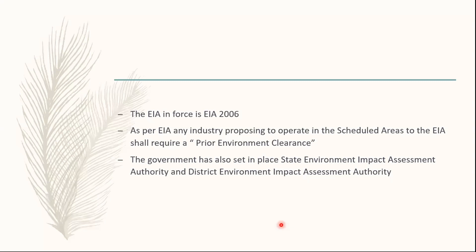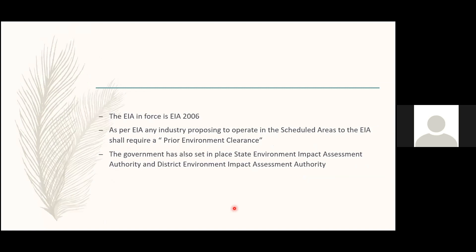Since 1991, the EIA has been enforced, with more than four or five notification revisions. The present EIA enforced is the one notified in 2006. The general procedure: EIA is drafted by MOEF, then opened to the public for comments. Once expert and public comments and objections are received, MOEF considers all concerns and publishes the final draft in the Gazette. The present EIA includes the concept of prior environment clearance, requiring all scheduled industries proposing to operate or expand in scheduled areas to obtain it. States are also required to set up Environment Impact Assessment Authorities and district-level impact assessment authorities, all reporting to the national MOEF.